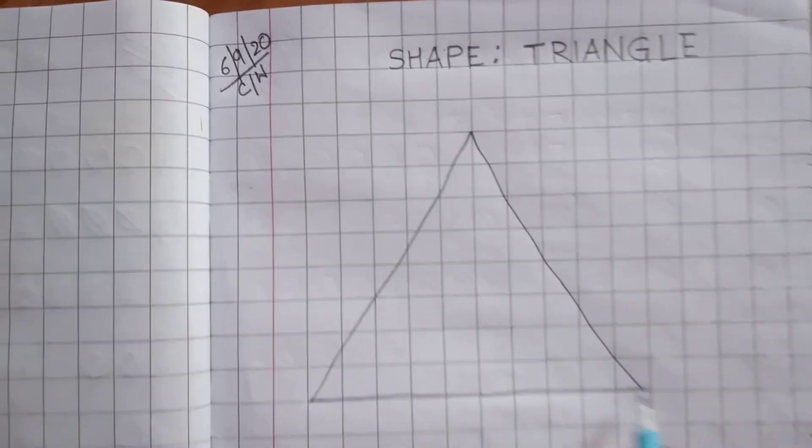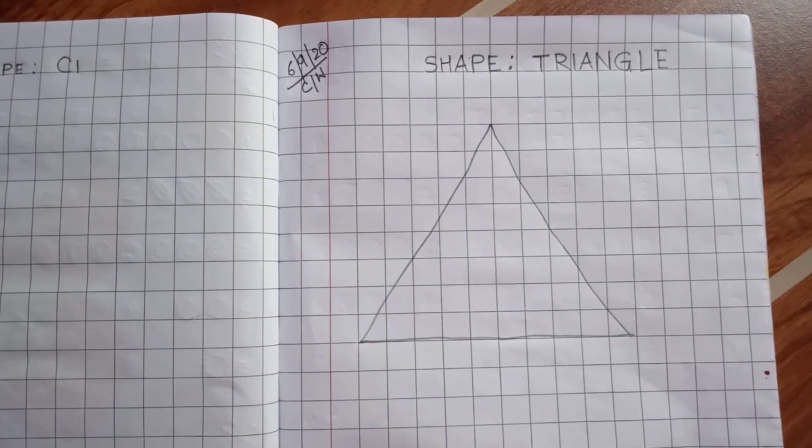Then we will draw another slanting line like this. And here comes the triangle.